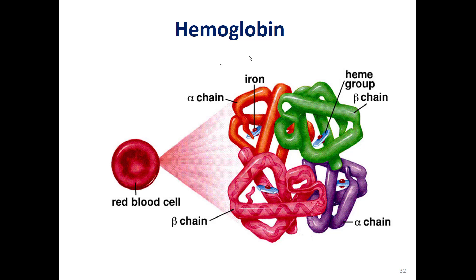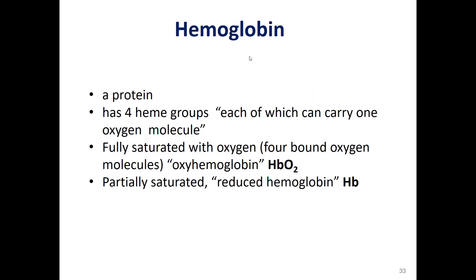What is hemoglobin? Hemoglobin is a protein that has four heme groups or four iron groups. Each one will carry one oxygen molecule. Thus, if a hemoglobin molecule has all four oxygen molecules attached, we say it is saturated — or oxy-hemoglobin, or oxygenated hemoglobin.